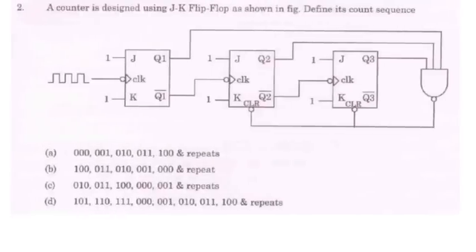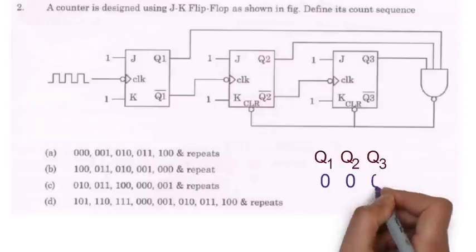In second question, there is a JK flip flop and we have to define its count sequence. So let's assume all the flip flops are reset at start. So Q1, Q2 and Q3 will be 0, 0, 0.